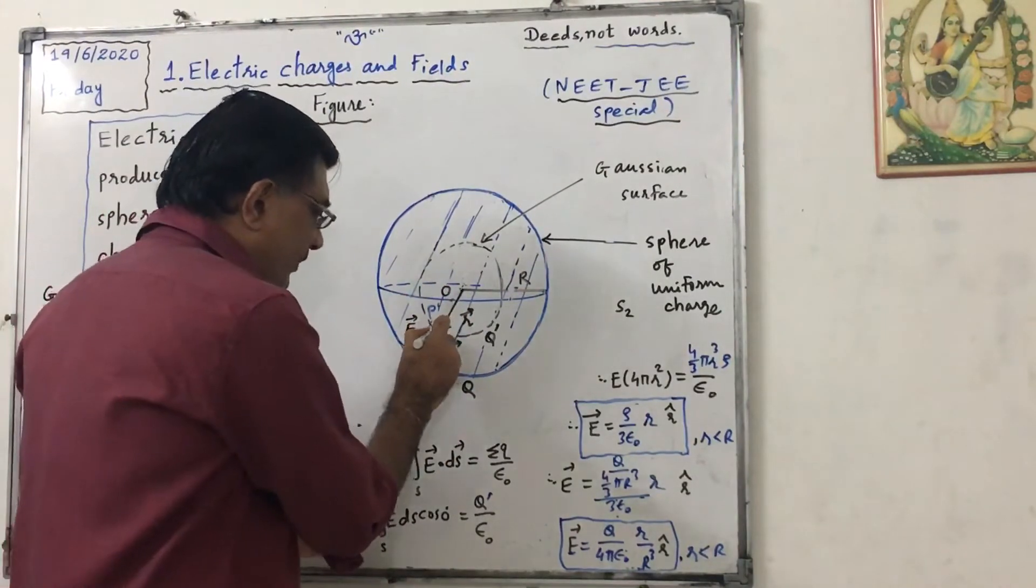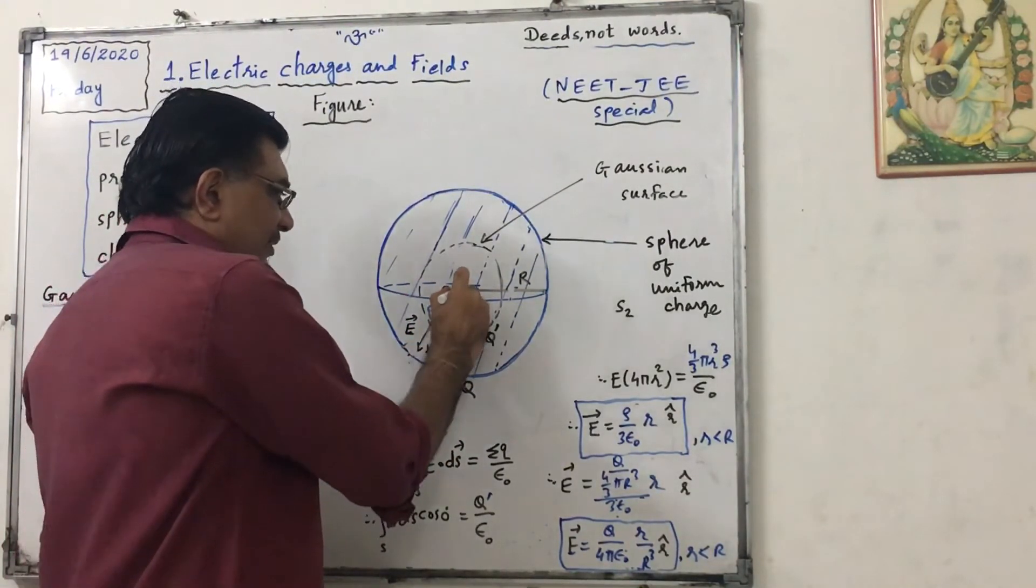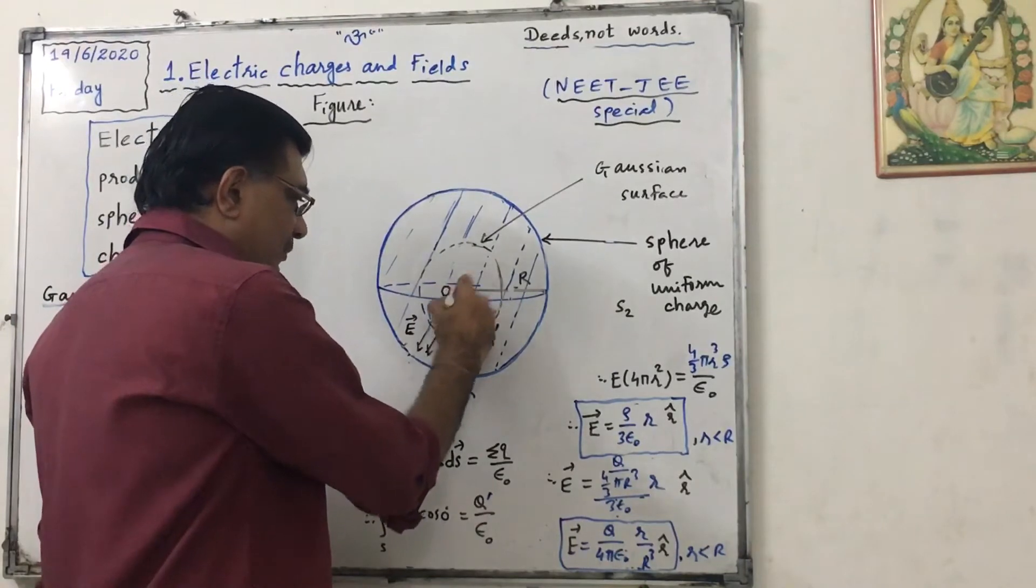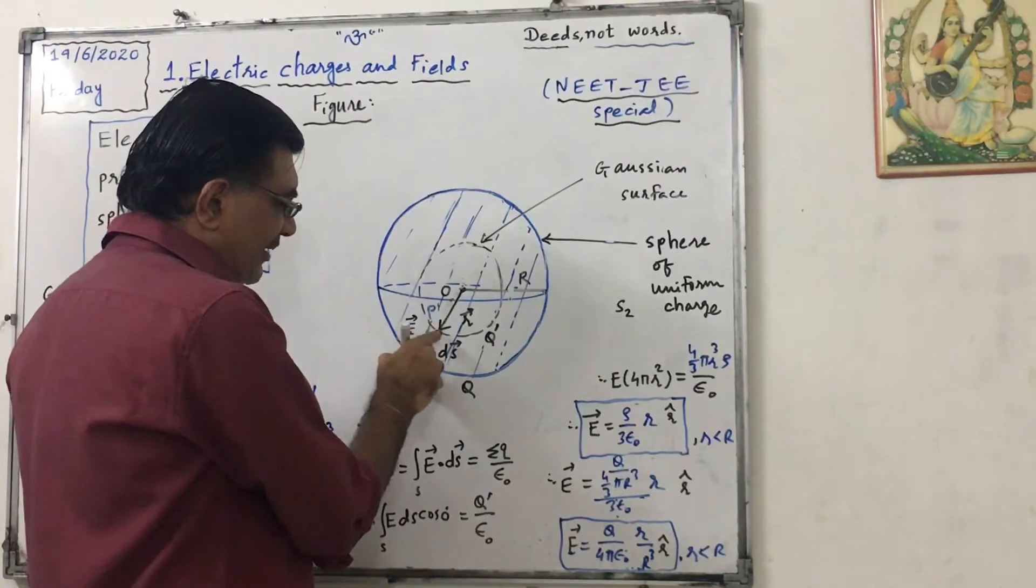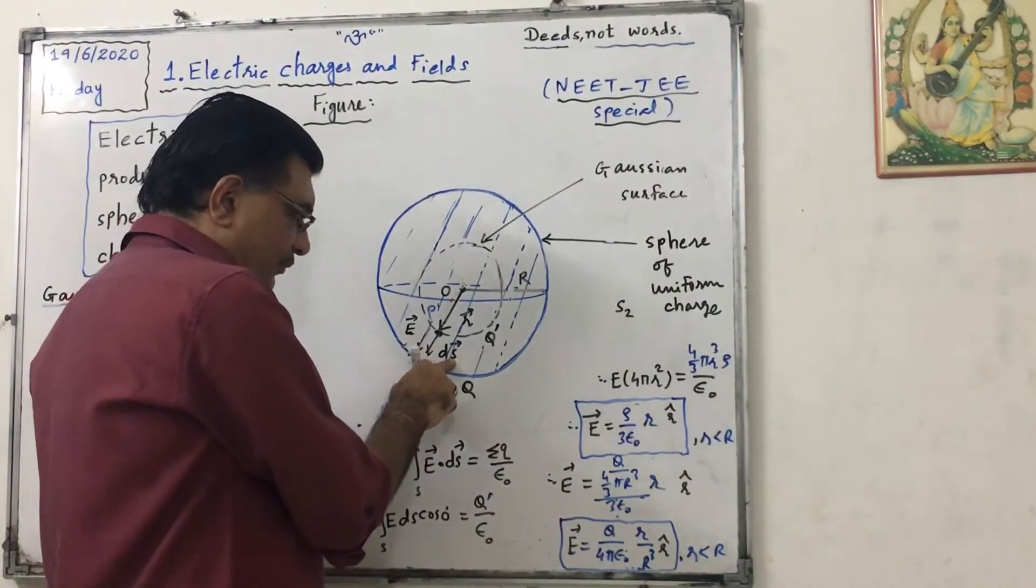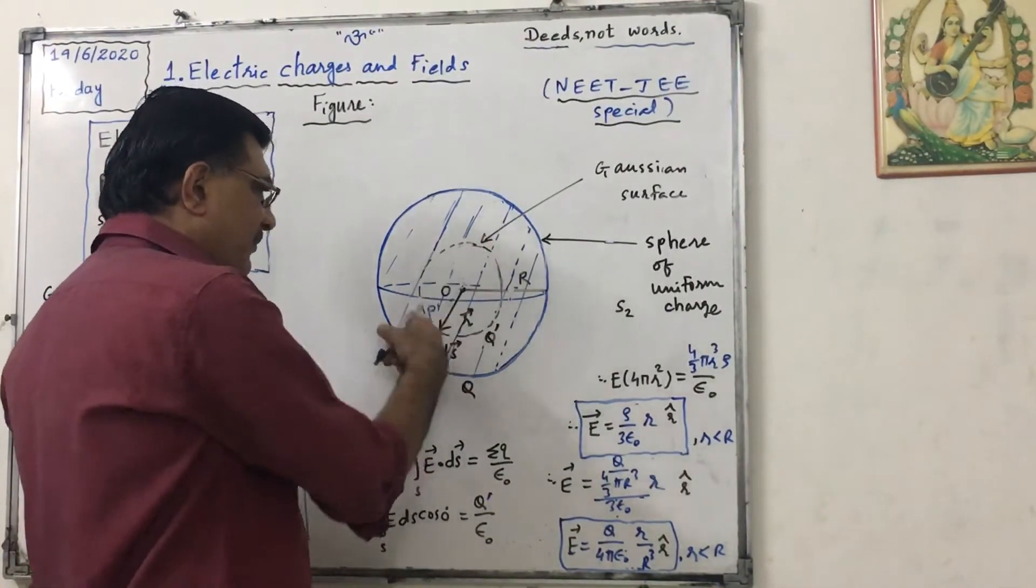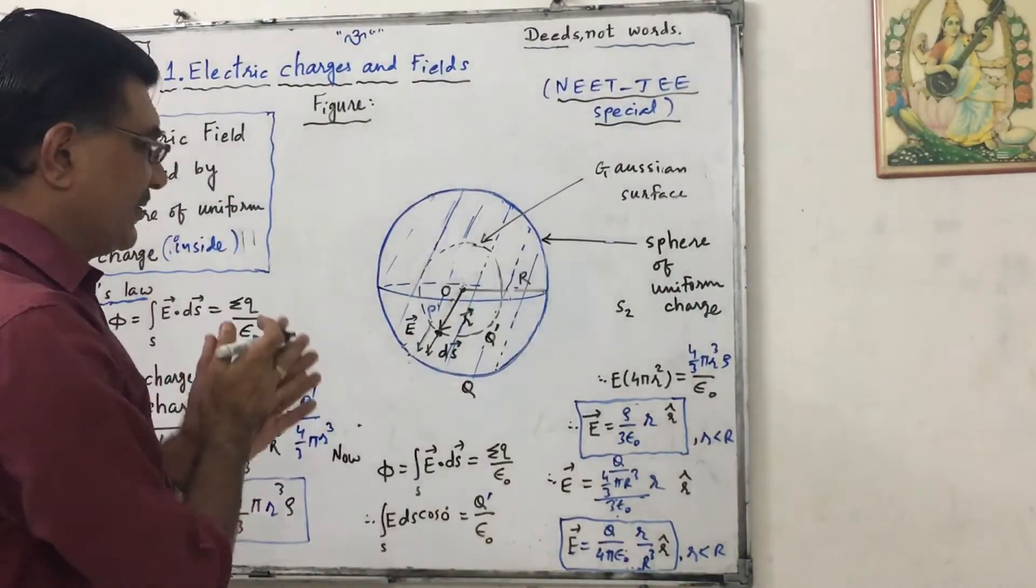Inside point P at distance small r from center. So this is the sphere of radius capital R, it has small surface element with area delta vector ds and electric field is vector E. This is the sphere.